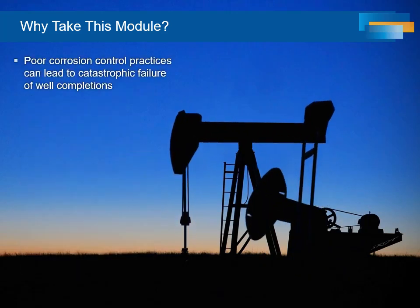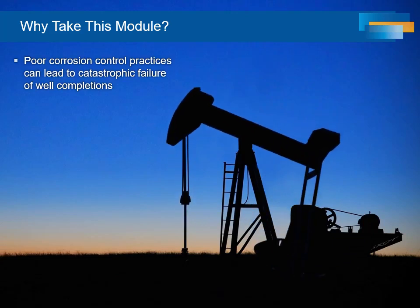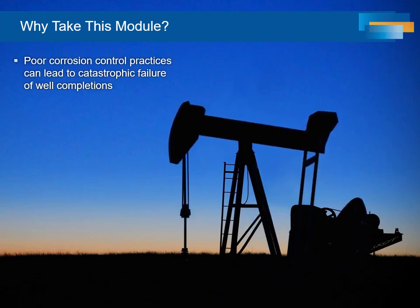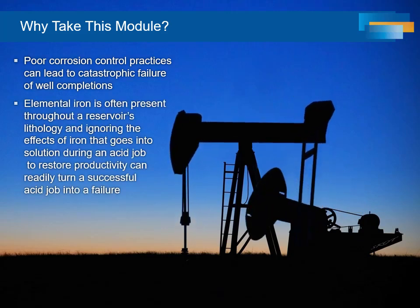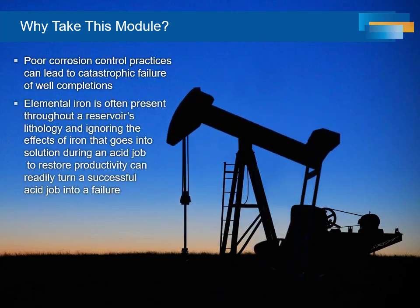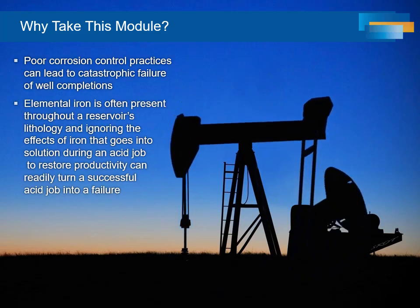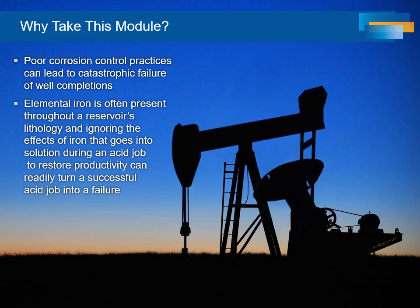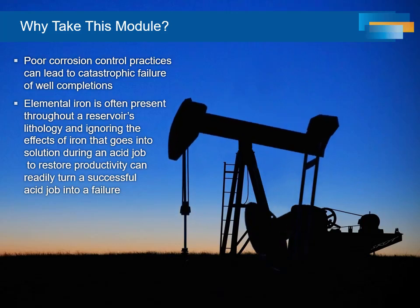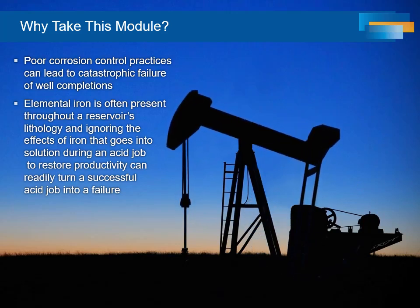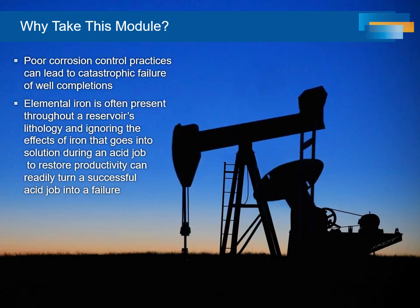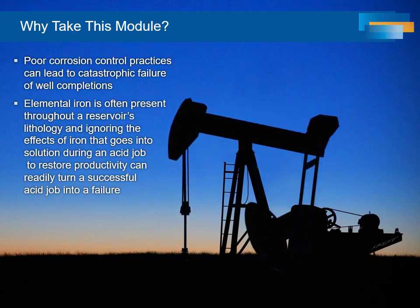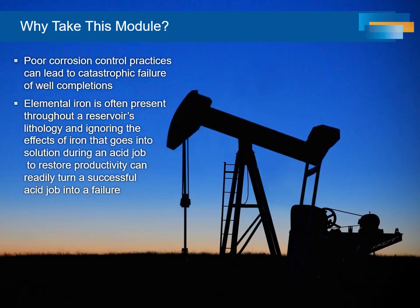Poor corrosion control practices can lead to catastrophic failure of well completions. Elemental iron is often present throughout a reservoir's lithology, and ignoring the effects of iron that goes into solution during an acid job to restore productivity can readily turn a successful acid job into a failure. This is due to the precipitation of iron as pH rises during flowback and cleanup following an acid job.